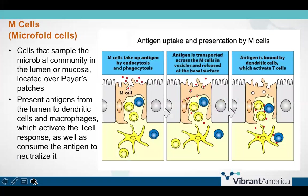Where we do see some direct contribution to barrier integrity is through the actions of M cells, or microfold cells. These are found in the epithelial layer and are constantly sampling the environment of the intestinal lumen for microbes that may pose a threat. Because of their location over or near the Peyer's patches, they are able to grab microbial antigens through endocytosis or phagocytosis and present those antigens to dendritic cells, which then instruct T cells to respond to the threat. Without this critical immune function and interaction with the commensal microbiome, we lose tolerance to beneficial microbes and are unable to defend against pathogens. As we lose barrier integrity, this inflammatory response remains unchecked.